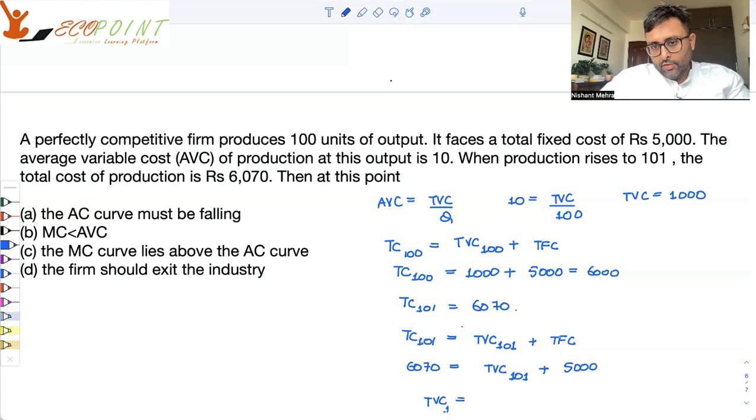TVC of 101 units is 1,070. Can we find out AVC? AVC of 101 units is TVC of 101 units upon 101, that is the total Q. What is TVC of 101 units? 1,070.